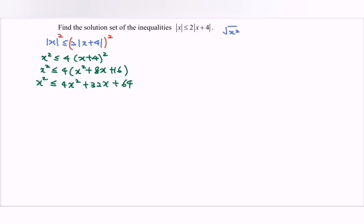So simplify the equation. 3x square plus with the 32x plus with 64 greater equals to 0.